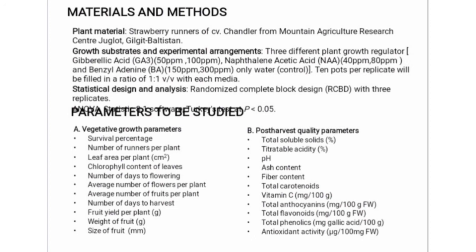The post-harvest quality parameters are as follows: total soluble solids, titratable acidity, pH, vitamin C content, total carotenoids, total anthocyanins, total flavonoids, total phenols, and antioxidant activity. This is all about my presentation. Thank you so much.